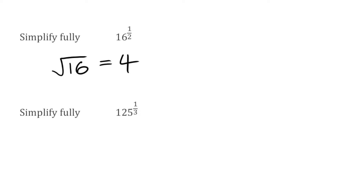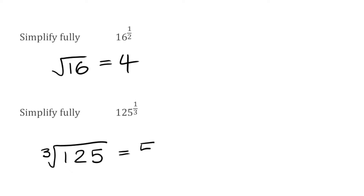For this next example, we have 125 to the power of a third. Again, because we have a fractional index, we find the root denoted by the denominator. This time it's going to be a cube root because we have a three on the bottom. The cube root of 125 is five, and that's our final answer because we have a one on the numerator.